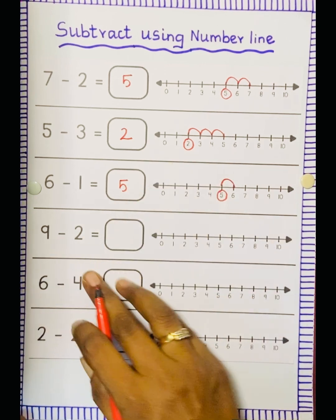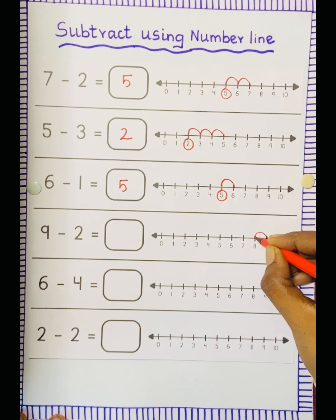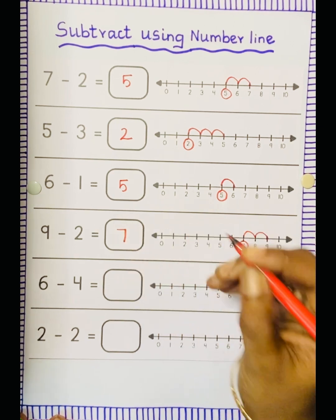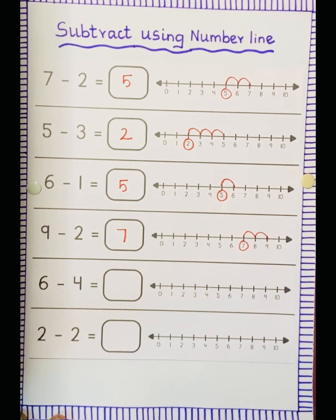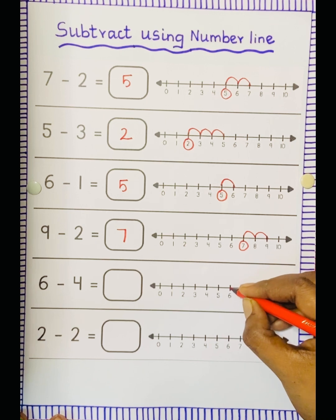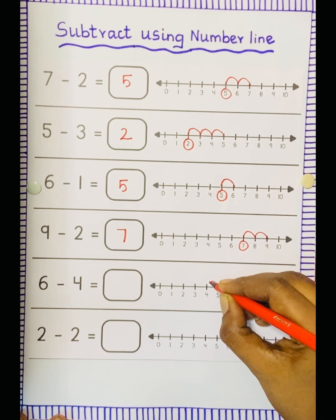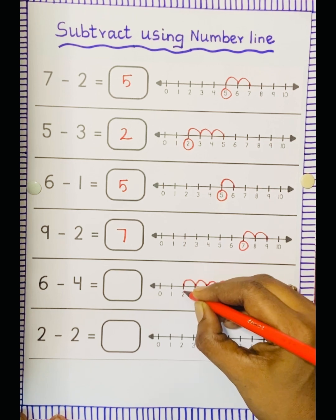9 minus 2. So keep the dot at 9, minus 2 means 2 jumps: 1, 2. So the answer is 7. Next is 6 minus 4. So keep the dot at 6, minus 4, that is 4 jumps: 1, 2, 3, 4. So the answer is 2.